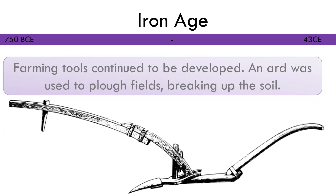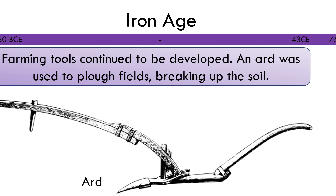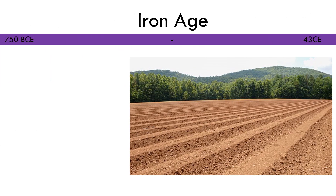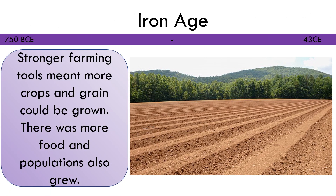Farming tools continued to be developed and the Ard was used to plough fields, breaking up the soil. Farming tools meant that more crops and grain could be grown. There was more food and populations also began to grow.